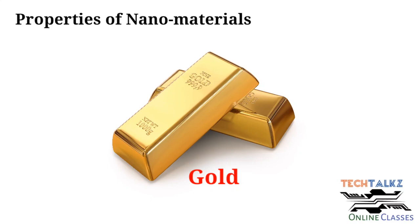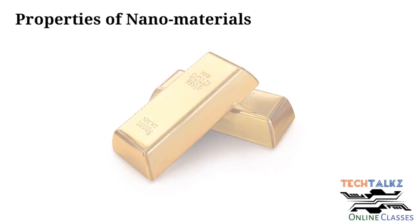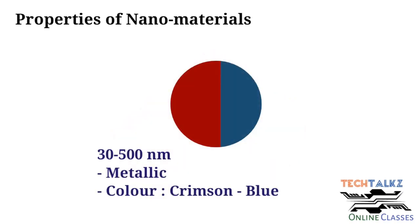Take the metal gold as an example. It is shiny yellow metal, commonly used for making ornaments and jewelries. When it is bulk, it is an inert material. When it goes down to nano size, its properties are going to change. The gold particle of size between 30 to 500 nanometer is metallic.